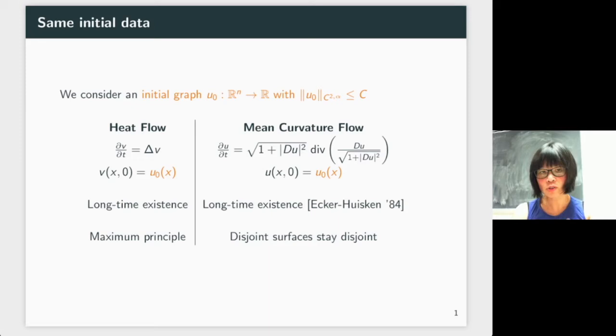In the mean curvature flow, there's also a similar principle, and it translates as: if you start with two surfaces that are disjoint, then they will stay disjoint under the mean curvature flow.